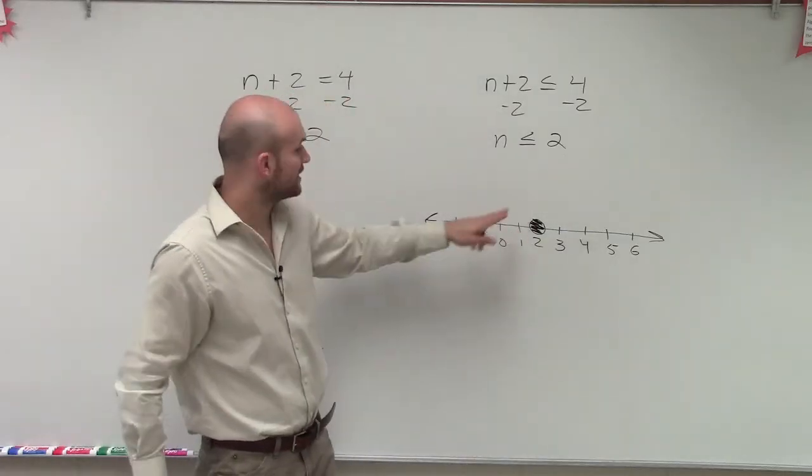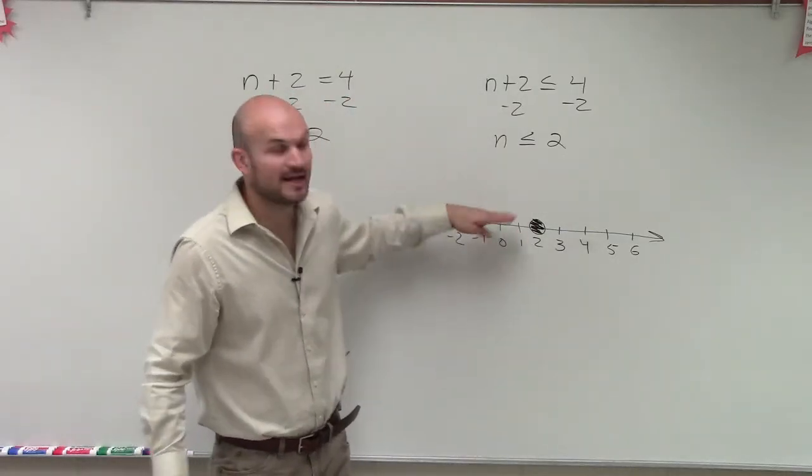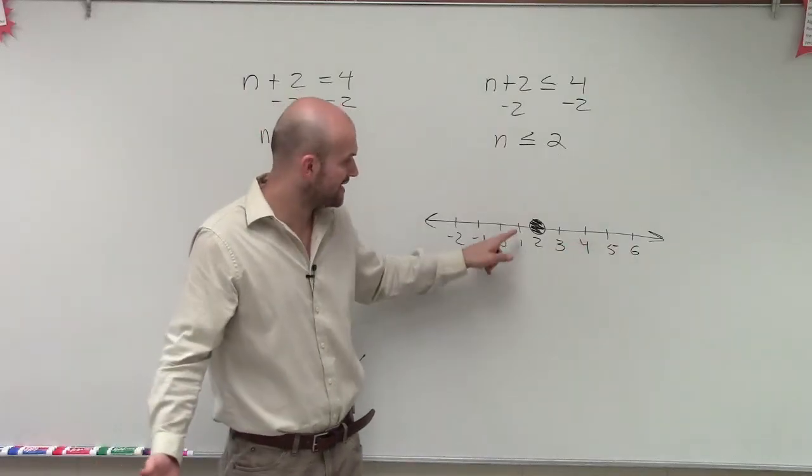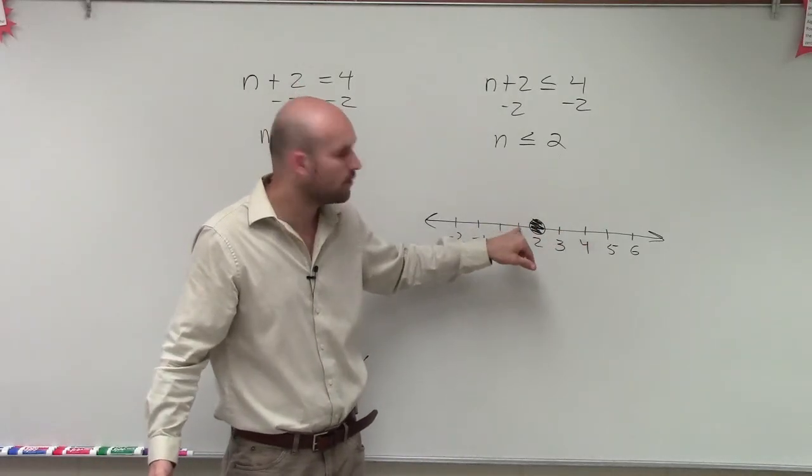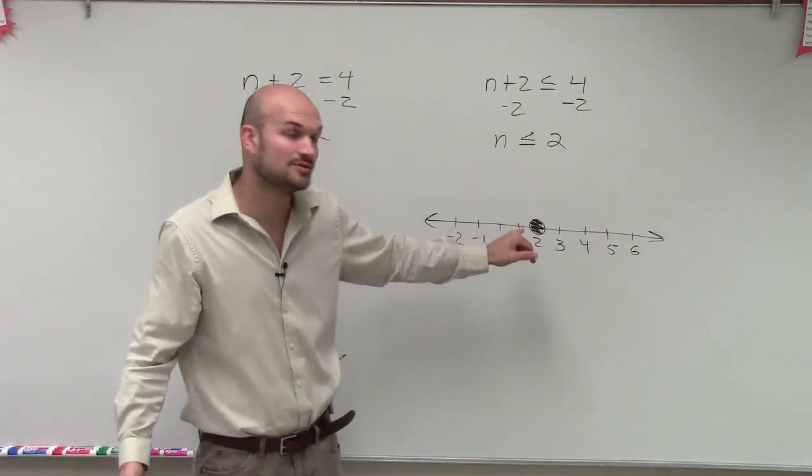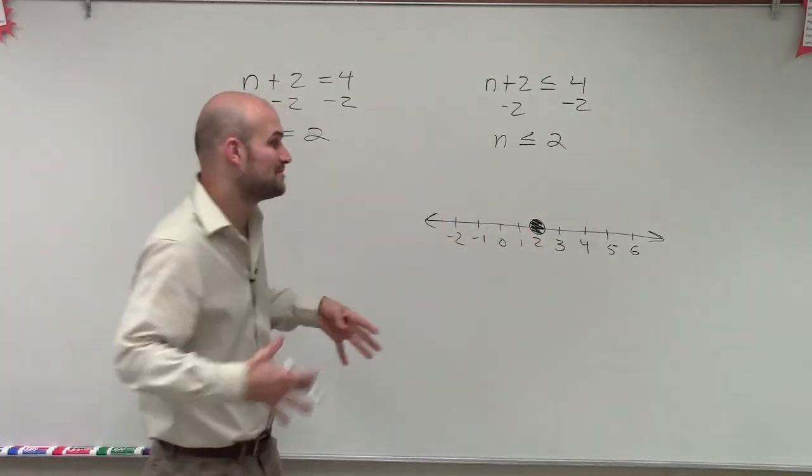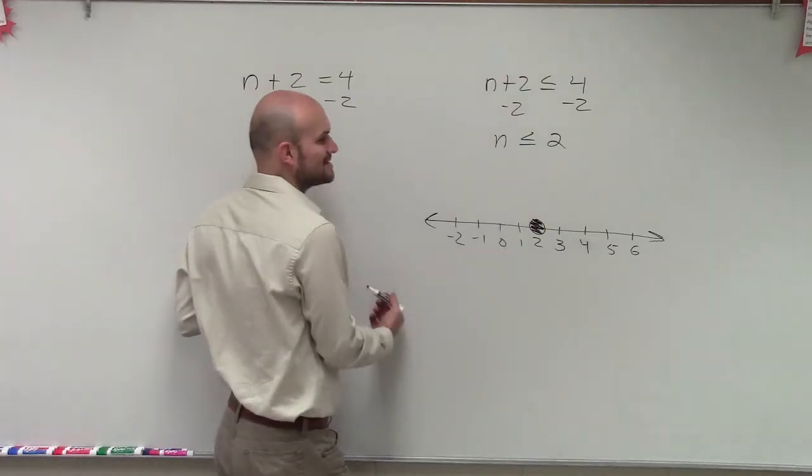Now, it could also be 1. It could also be 0. It could be negative 1. So I can make all these big dots if I wanted to. But then you notice that there's actually infinitely many solutions. Because I could do 1.1, 1.112, you can pick all these decimal numbers and fractions that are going to be less than 2 that will still be a solution.